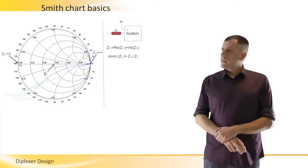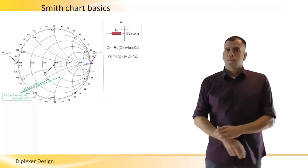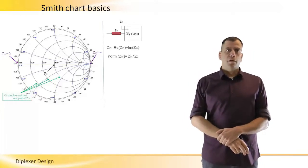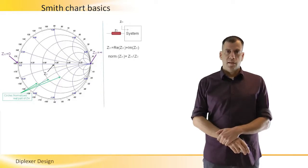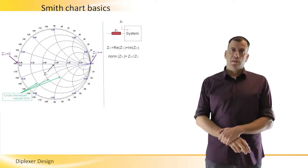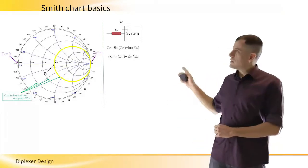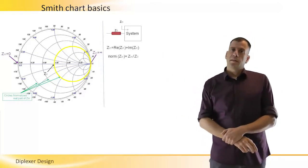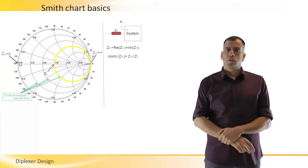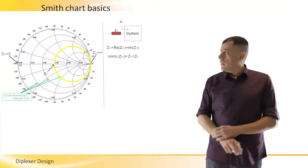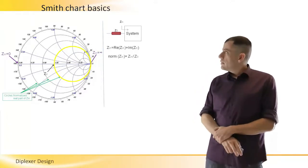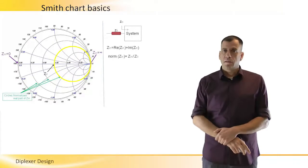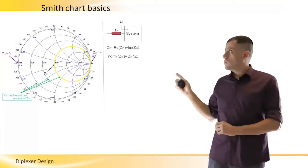The circles on the Smith chart represent the real part of the input impedance, which is the resistance. The unity circle, which passes through the center of the Smith chart, represents the real part equal to ZO. Since it is normalized, the resistance equals one.